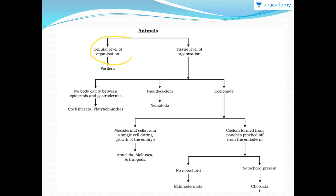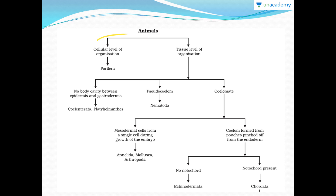Animals having cellular level of organization means that cells are just divided and form their organism — there is no differentiation into tissues. A tissue is a group of cells which perform a particular function. Animals having cellular level of organization are Porifera. Tissue level of organization is further divided: those having no body cavity, that is coelom, between the epidermis (outermost layer) and gastrodermis (layer surrounding the inner cavity) — these are Coelenterata and Platyhelminthes.